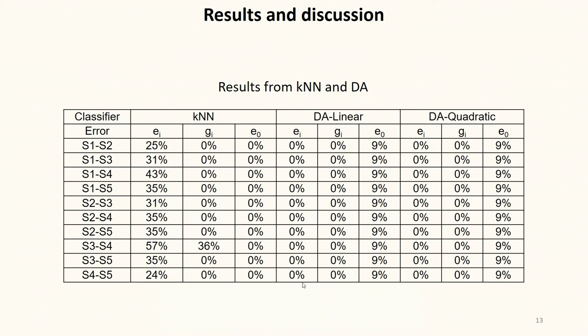When using the KNN method, significantly higher values of the main classification error are observed. This shows that the data from the first class fall incorrectly into the second one. Between classes S3 and S4 there is an increase in the actual error, which indicates that class 1 includes data from the second class. Although the total classification error is 0%, the use of KNN for the classification of textile fibers is inappropriate because more than 10% of the data are misclassified. When using discriminant analysis, regardless of the type of the separation function, uniform classification errors of up to 10% are obtained. The accuracy of classification depends on the features used in the vector, the method for reducing the volume of data, as well as the type of classifier. The accuracy of classification does not depend on the type of separation function.